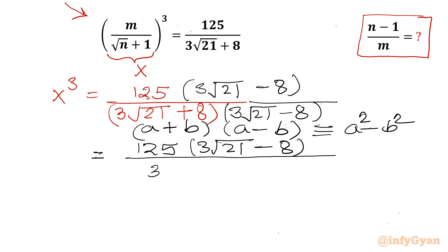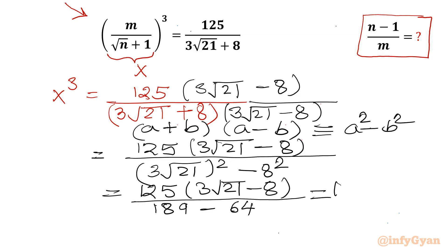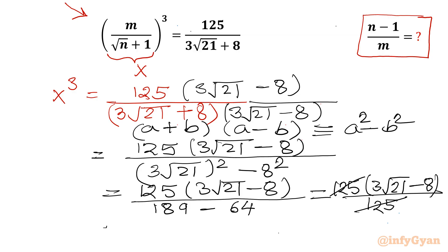The denominator is (3√21)² - 8² using the a²-b² formula. That gives 9×21 - 64 = 189 - 64 = 125. So x³ = 125(3√21 - 8) / 125, and the 125s cancel, giving x³ = 3√21 - 8.